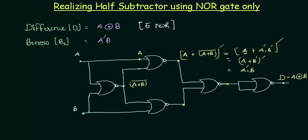This is the same as our borrow. This is A complement B, and our borrow is also A complement B. So we don't need any additional gates beyond these 5 gates to realize the borrow. You can take the borrow from here, which is A complement B.